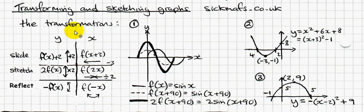When we say transforming graphs, we're talking about any graph. There are some rules that you have to follow for any graph. f(x) represents any graph, and there are certain things you can do to a graph — for example, you can add 2 to the end of the function.